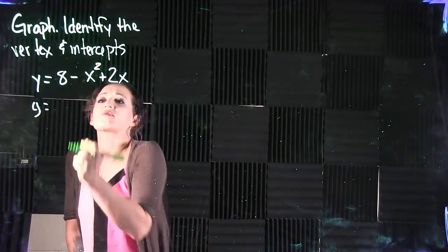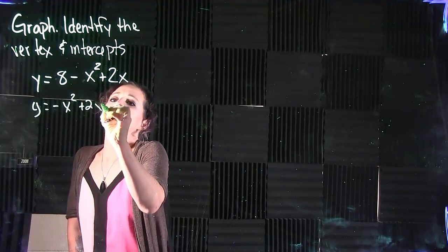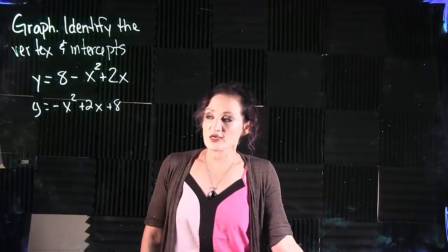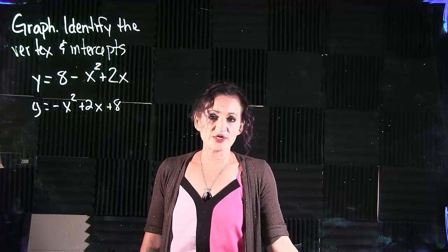If we want to graph this, let me go ahead and put this in proper form. You do want your squared term to be in front, followed by x to the first, followed by your constant at the back of the equation here.